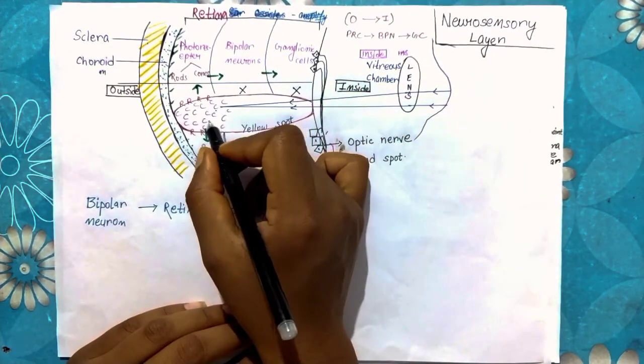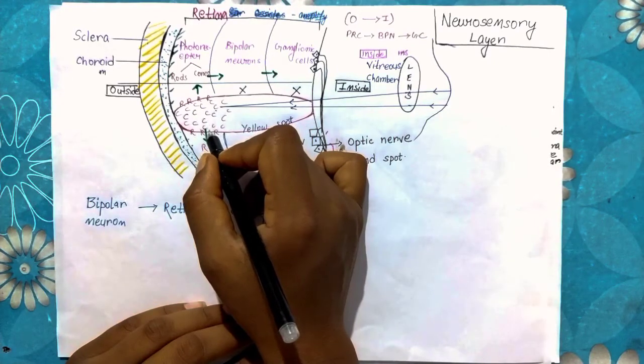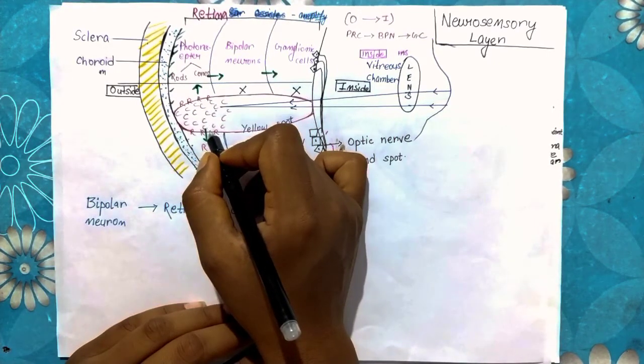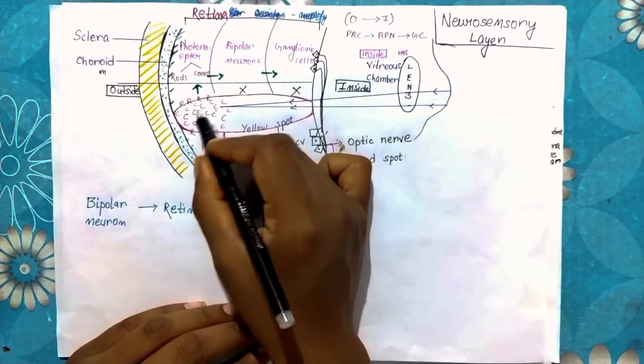In the yellow spot, there is formation of the image. There are rod cells present and cone cells present. Which cells are present in the center? Cone cells are present in the center.